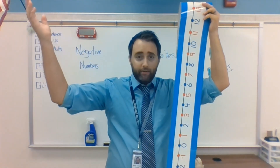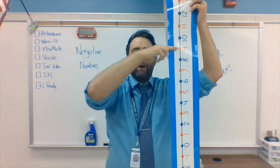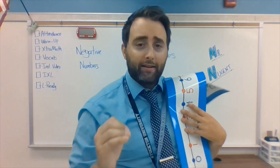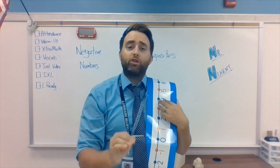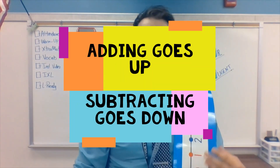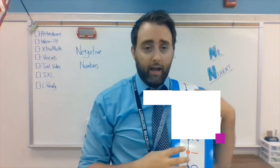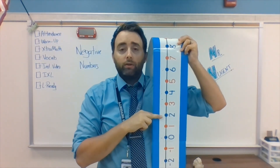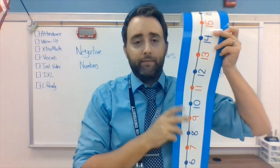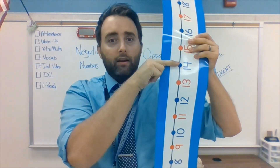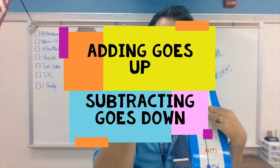Now, obviously to go back down, I have to subtract. So no matter what number you start at, if you are subtracting, you're going down. If the end-all math you're doing is subtraction, you're going down. If the end-all math you're doing is adding, you're going up. So if I'm at two and I have to add four, I'm going up. If I'm at fourteen and I've got to subtract seven, I'm going down — because no matter what, adding is up, subtracting is down.